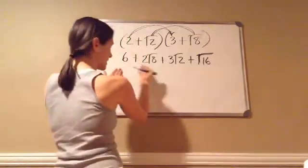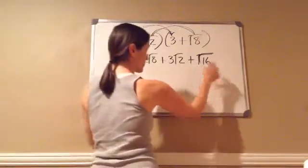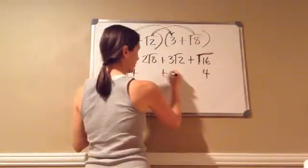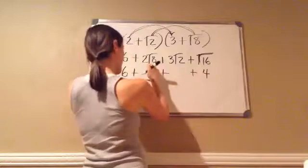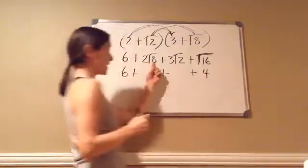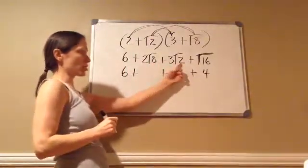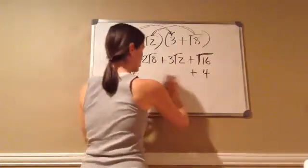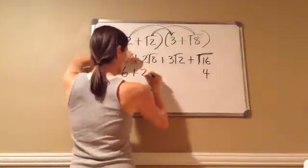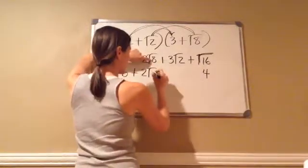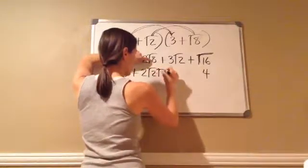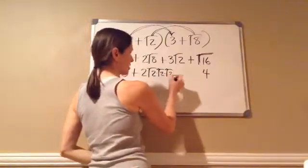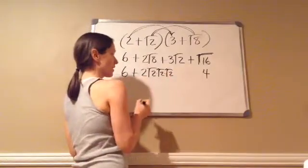Now I'm going to look at this and see if there's anything else I can do. I know that the square root of 16 is 4. I'm going to bring the 6 down, and then this I can do something with, because you see how this is square root of 2? Square root of 8 is — let me just draw this — square root of 2 times the square root of 2 times the square root of 2. Square root of 2 times square root of 2 times square root of 2 is the square root of 8.